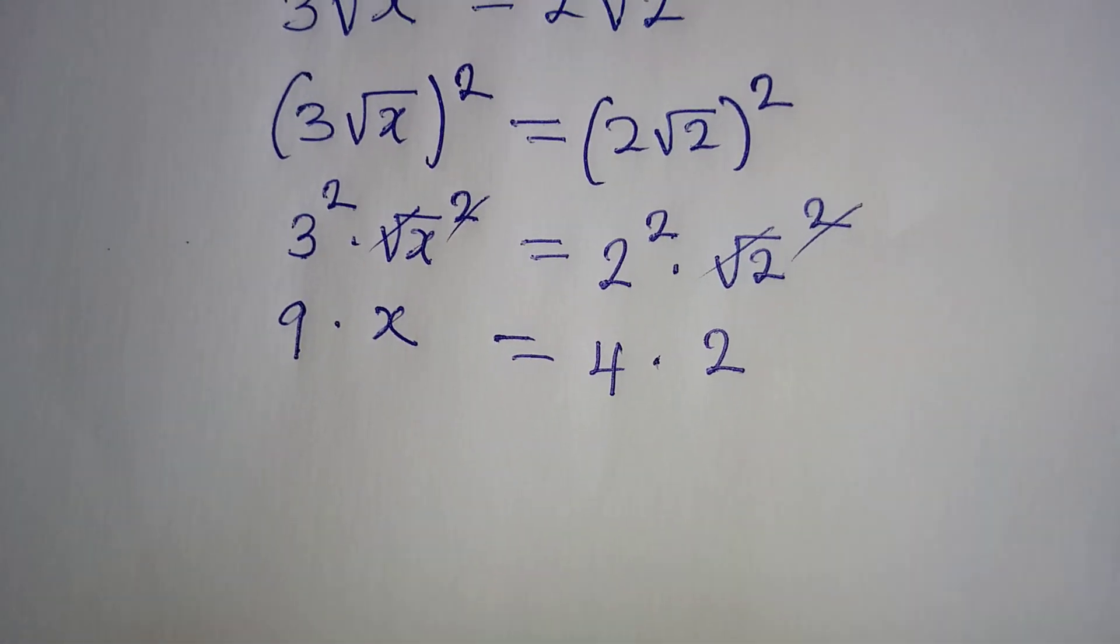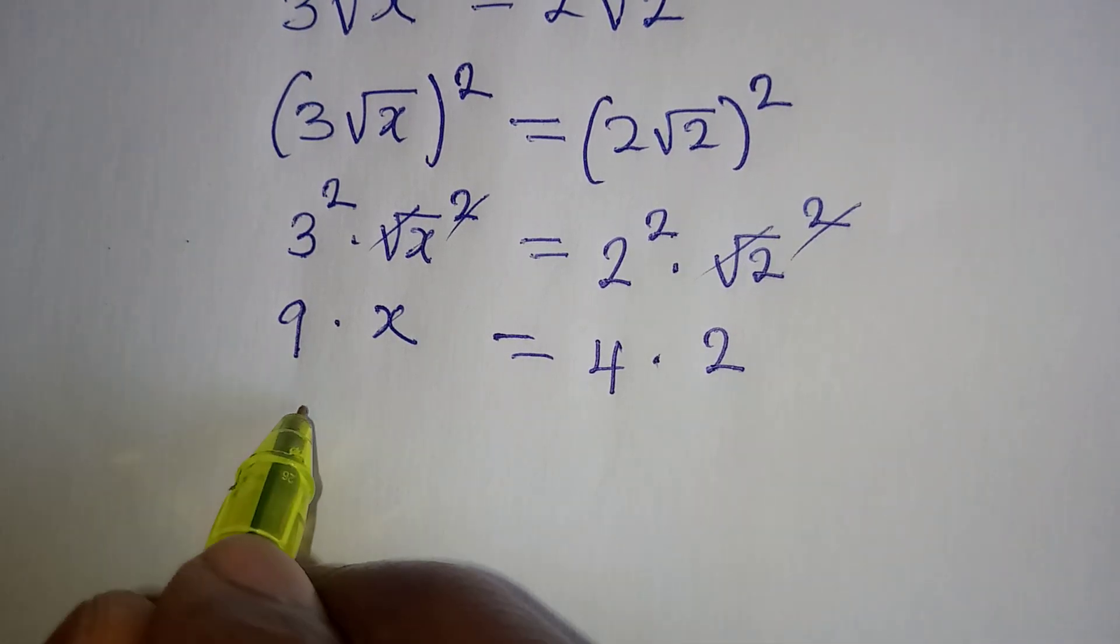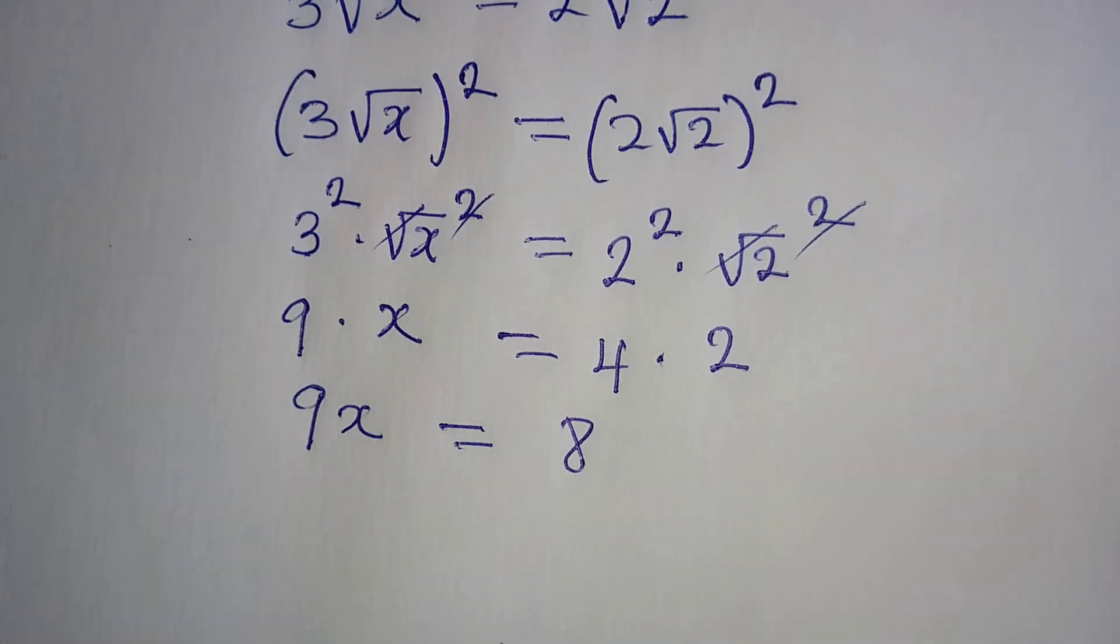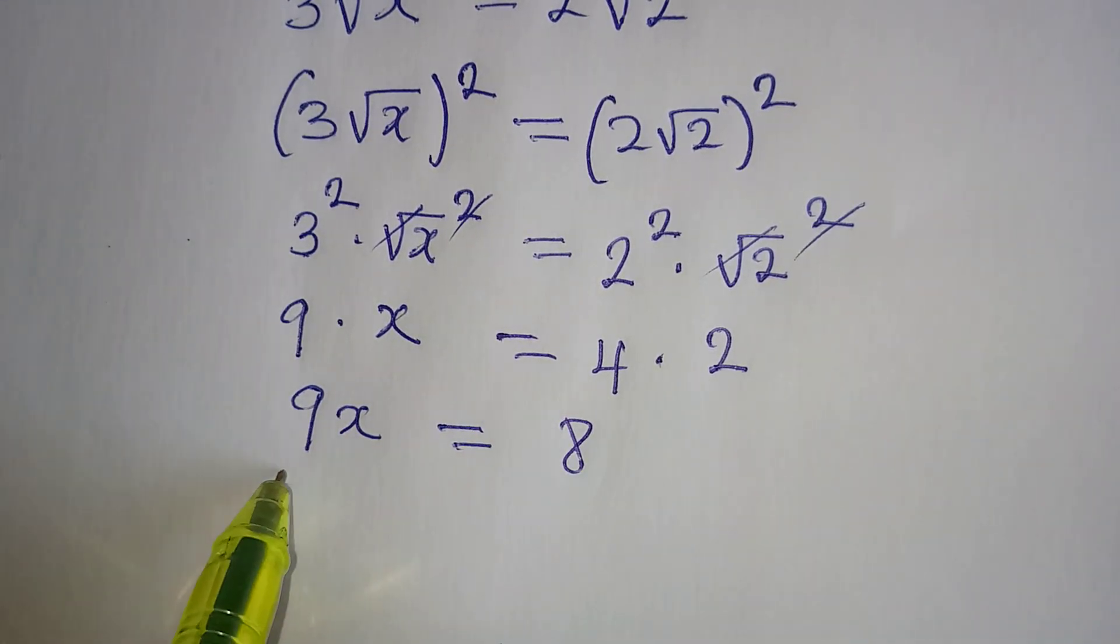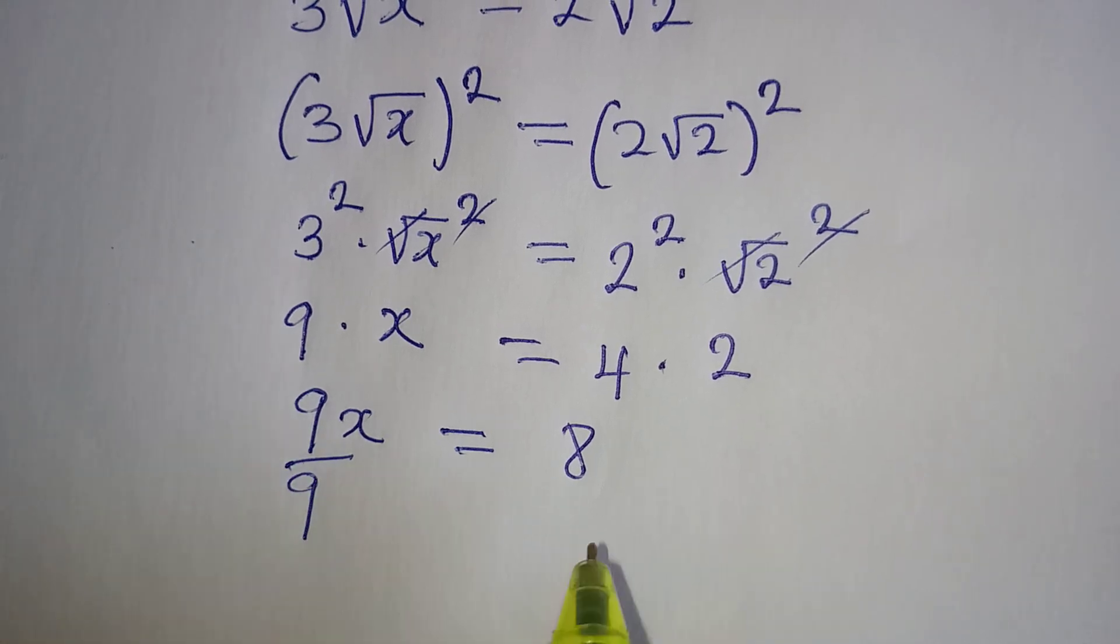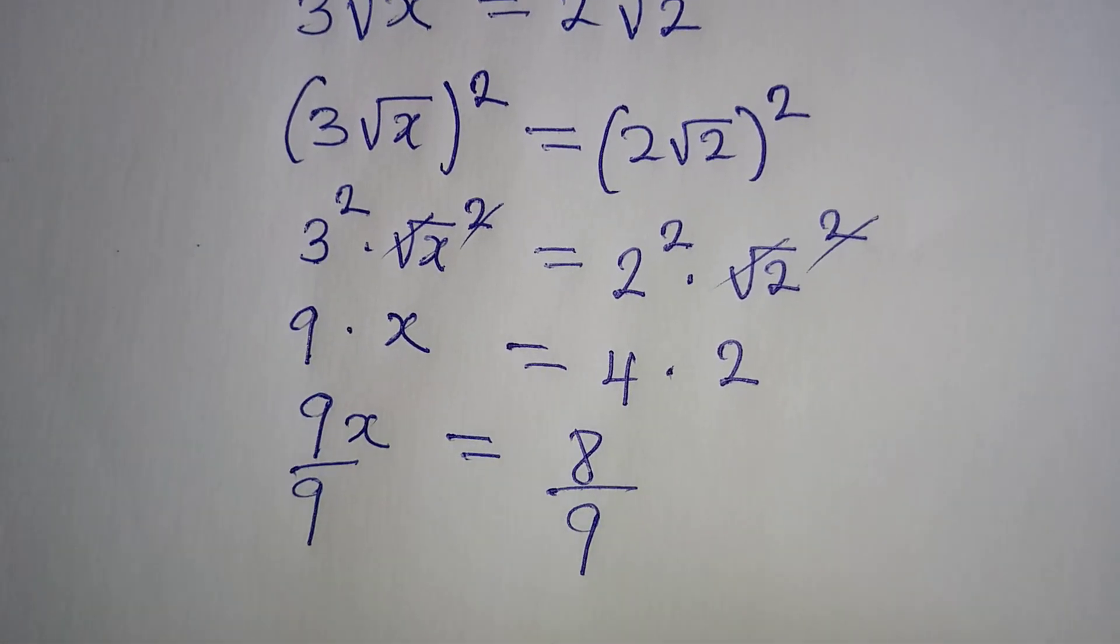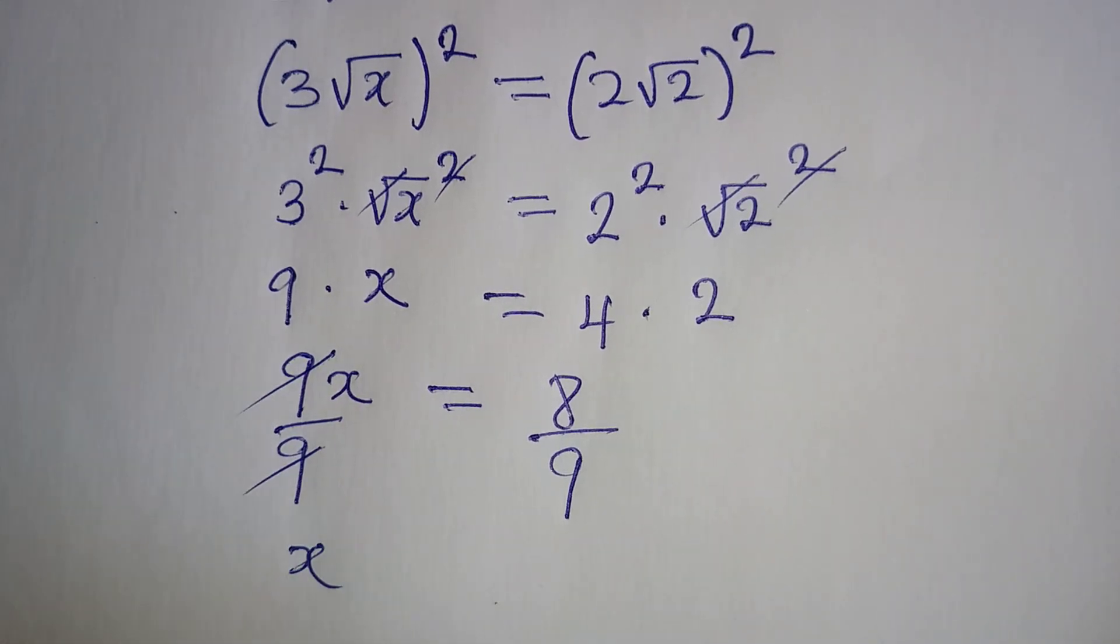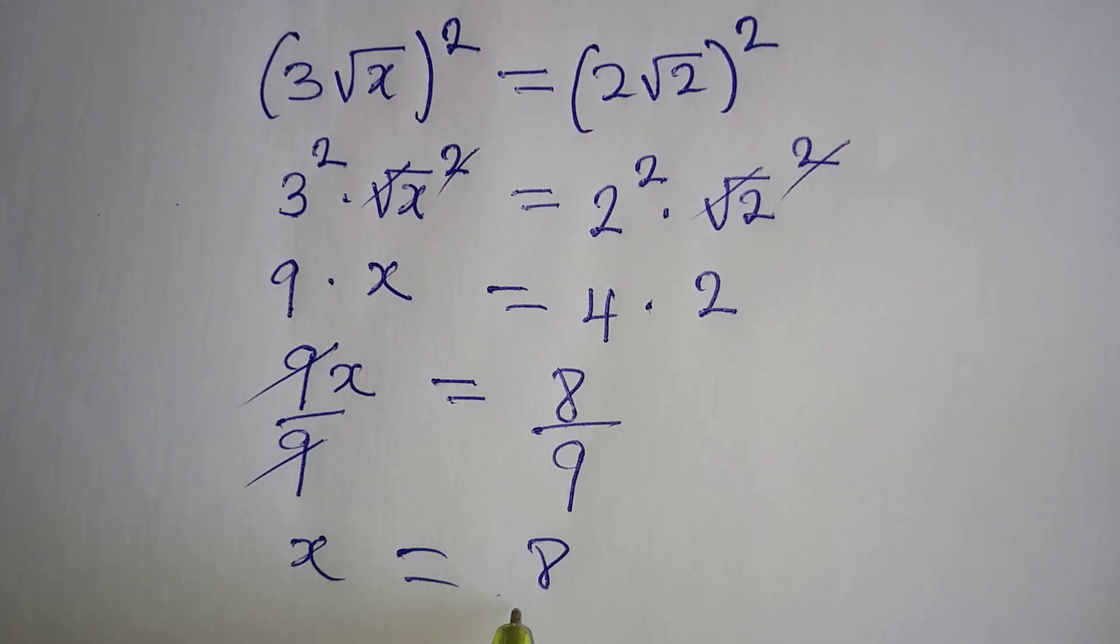To continue with this, we are going to have 9x being equal to 8. And we can simply divide both sides by 9. So we have divide by 9, divide this by 9,